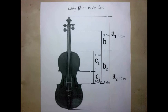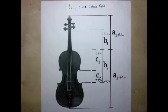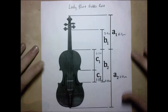This is a video about how the Lady Blunt Stradivarius violin is an example of the golden ratio. This photo is a scaled image of the original violin, and so these measurements were found using a ruler.